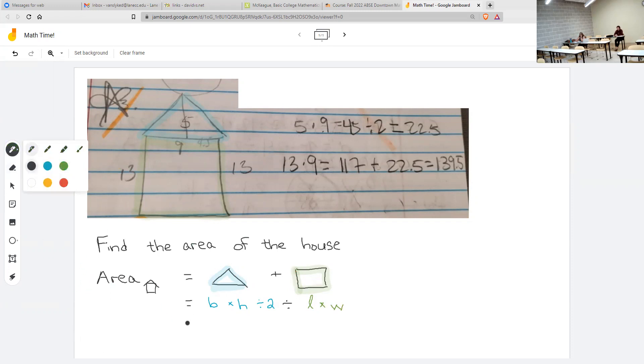Then for my third step, I will plug in the numbers. So what is the base of this? That was nine. Height is five. I wrote a plus. No one shouted and corrected me. It should be a plus in the middle. And then length times width 13 times nine.